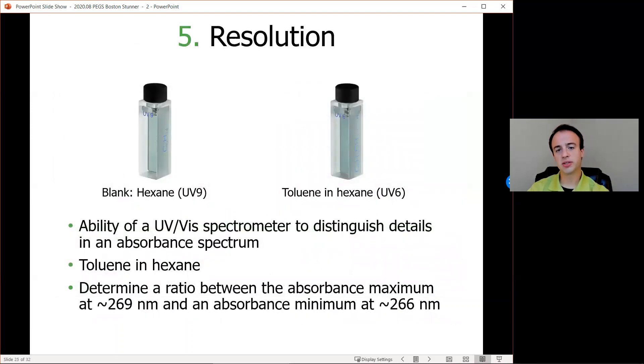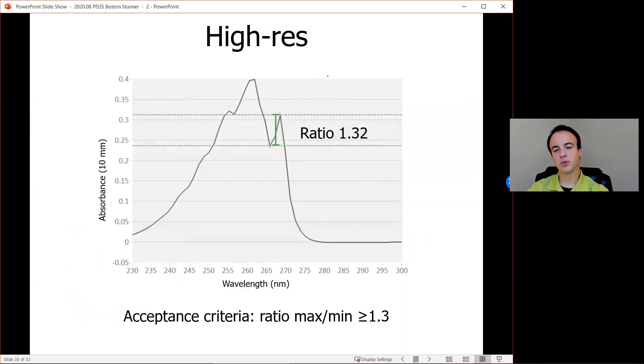To look at spectral resolution, we're referring to the ability of a UV-Vis spectrometer to resolve features in an absorbance spectrum. The spectral resolution of Stunner is better than two nanometers. So if absorbance minima and maxima are at least two nanometers apart, Stunner can resolve those features. The UV-Vis performance verification test for spectral resolution is performed by measuring the absorbance spectrum of toluene in hexane and determining a ratio between the absorbance maximum at about 269 nanometers and about 266 nanometers. The acceptance criteria for this test is a ratio of greater than about 1.3 to pass both the USP and European Pharmacopeia requirements. And looking at the results, we see that the ratio between the absorbance maximum and minima at those two wavelengths is above the required ratio, indicating a pass for this test for spectral resolution.